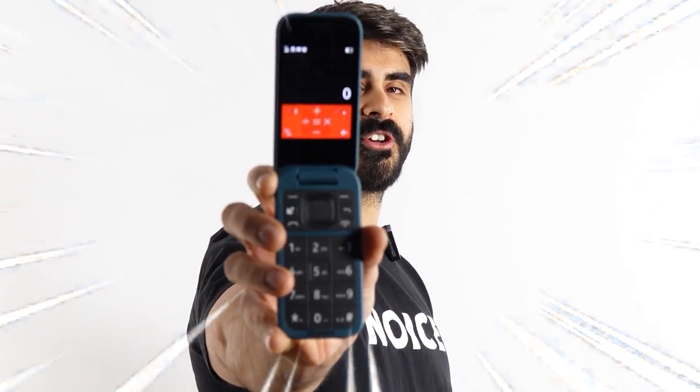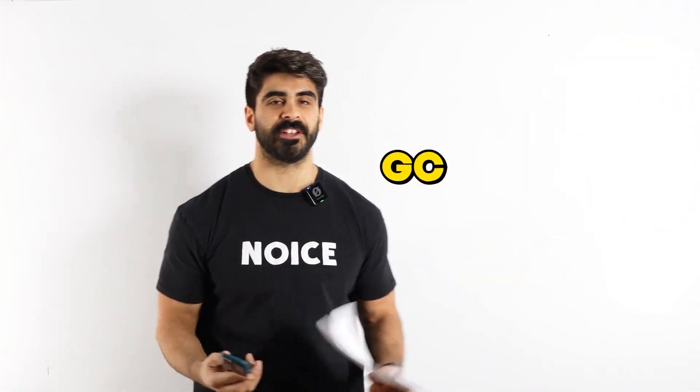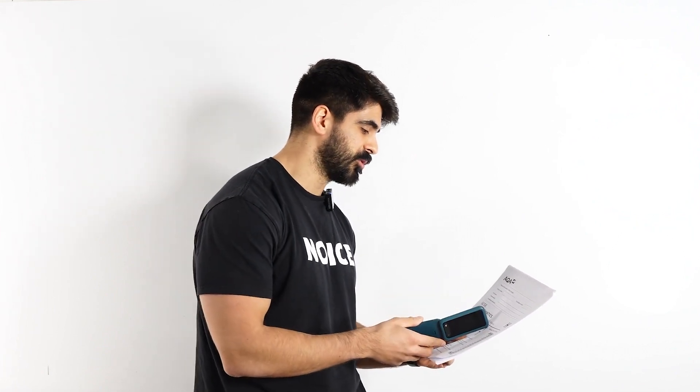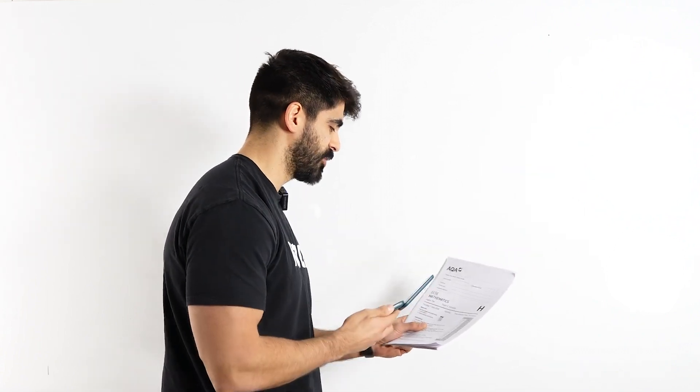All right, see ya. Right guys, as you heard from the call, Katheryn wants me to use my Nokia calculator to complete another GCSE paper. This time it's the calculator version of that AQA paper that I did blindfolded. So this is part two. I think Katheryn wants to see if I can beat her with a disadvantage, the same paper that she did in 2018. So without further ado, let's have a go.